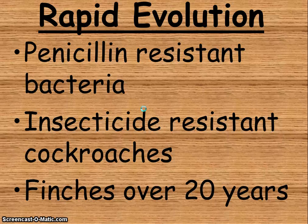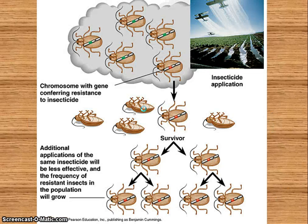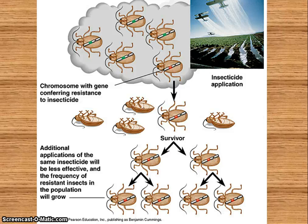The same thing happened with insecticide-resistant cockroaches. You would spray the cockroaches, and every once in a while there'd be one that survived — that would be the one that would reproduce and carry on, so spraying again would not work. And the finches of the Galapagos Islands is another example: within a 20-year period, we were able to see the finches' beaks change.